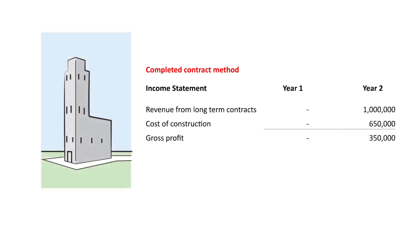Under the completed contract, no revenue or expenses will be recorded on the income statement until the project is completed. Why? The project has costs that are difficult to estimate and the project is relatively short. Those are the only times you're allowed to use completed contract. So in year one under completed contract, we'd have no revenue, no expense for cost, and therefore gross profit would be zero.